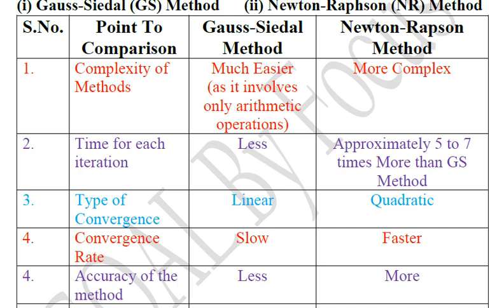Next point is the type of convergence. In case of GS method, convergence is linear. But in case of Newton-Raphson method, convergence is quadratic.